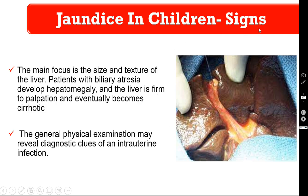Coming to the signs, the main focus is the size and texture of the liver. Patients with biliary atresia usually develop hepatomegaly with a very firm liver on palpation, which eventually becomes cirrhotic. This picture shows a cirrhotic liver due to biliary atresia, with an atretic gallbladder and atretic extrahepatic biliary ducts. The general examination may also reveal diagnostic clues of intrauterine infection.